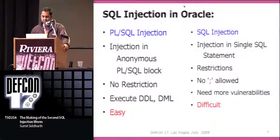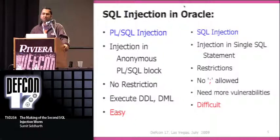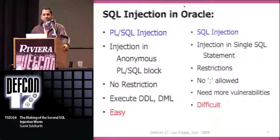Why are they different? That's because if you have the injection in a SQL statement like a SELECT query, Oracle by design does not support semicolons in single SQL statements. So you cannot end the query and do something like create a function. If it's a PL/SQL injection, things are quite straightforward — you can execute DML or DDL statements and use autonomous transactions to commit changes.